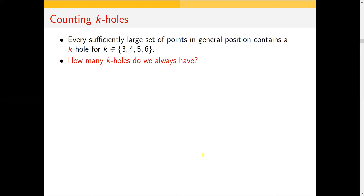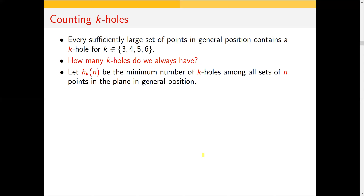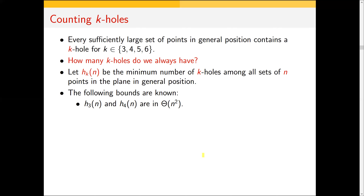Now that existence is settled, we can ask: how many k-holes do we always have? Let h_k(n) be the minimum number of k-holes over all sets of n points in the plane in general position. For three-holes and four-holes, we know there are point sets with only quadratically many, and on the other hand any set of n points has at least quadratically many. So the number of three-holes and four-holes grows quadratically in n.